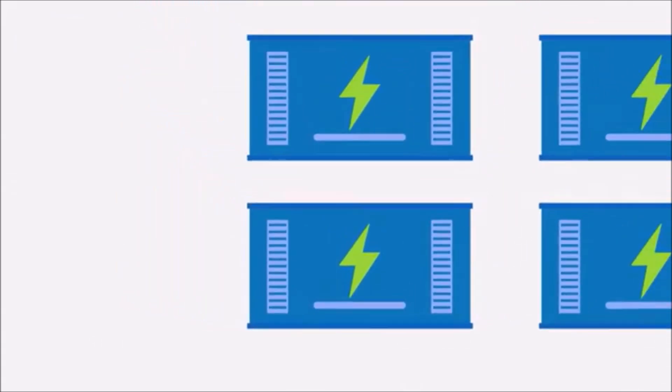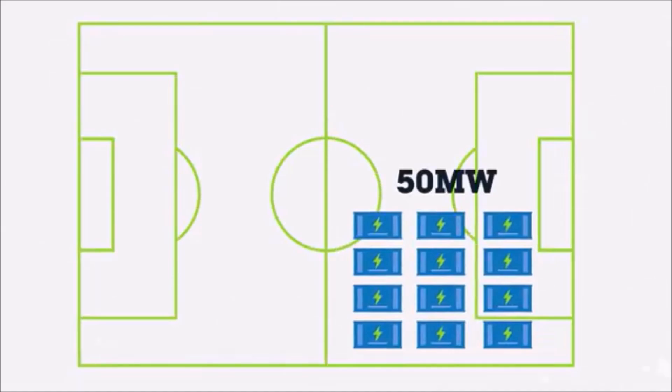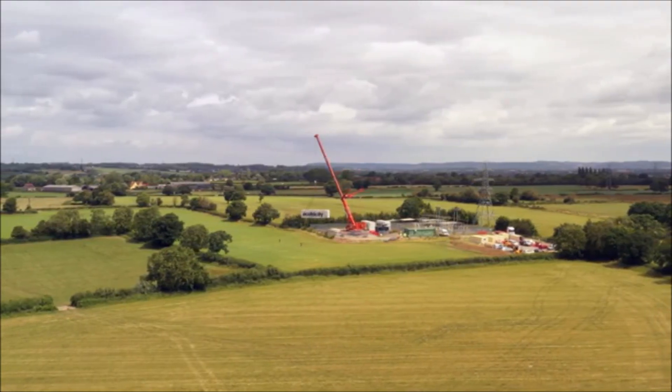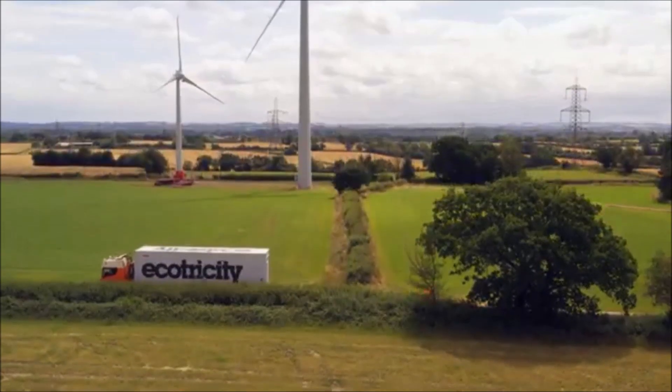A 50 megawatt battery needs a site around the size of a quarter of a football pitch. They can be situated on land already used for windmills and compared to other grid scale infrastructure, they don't use too much space.